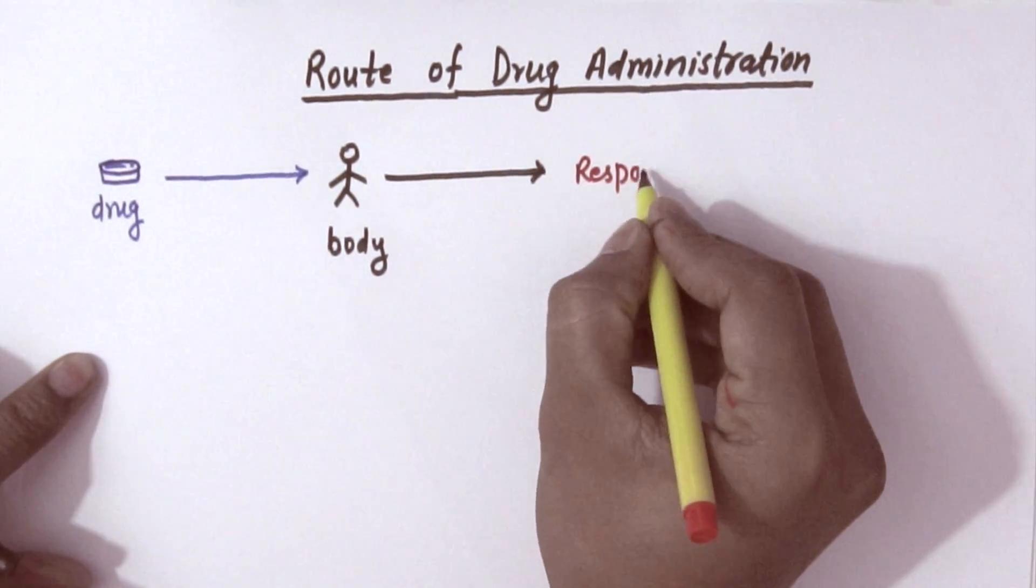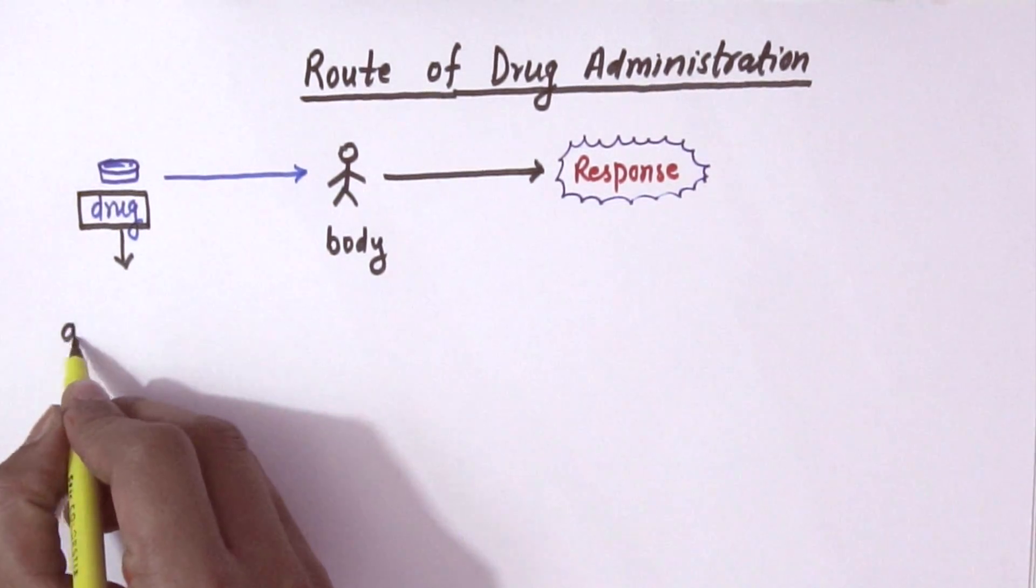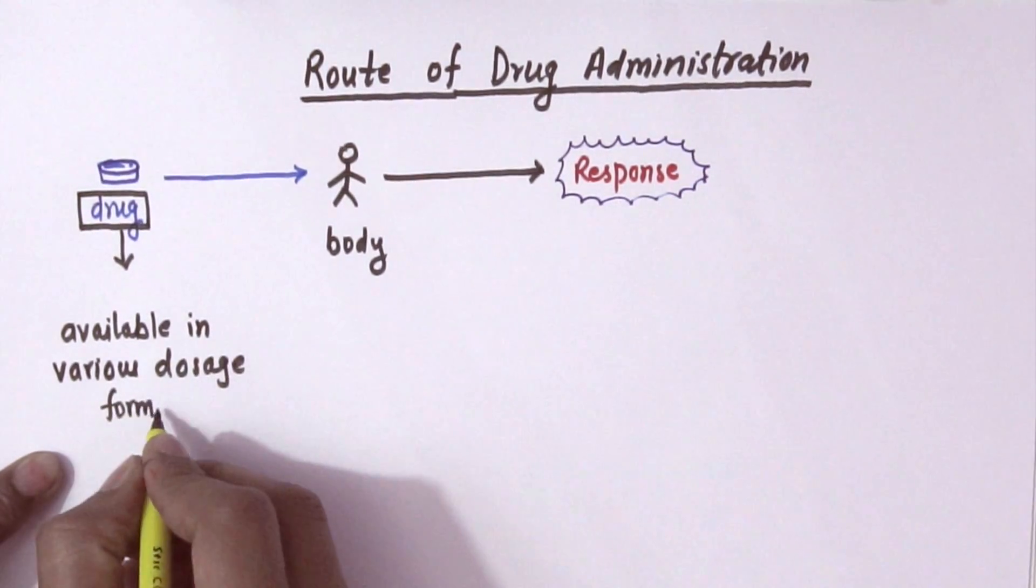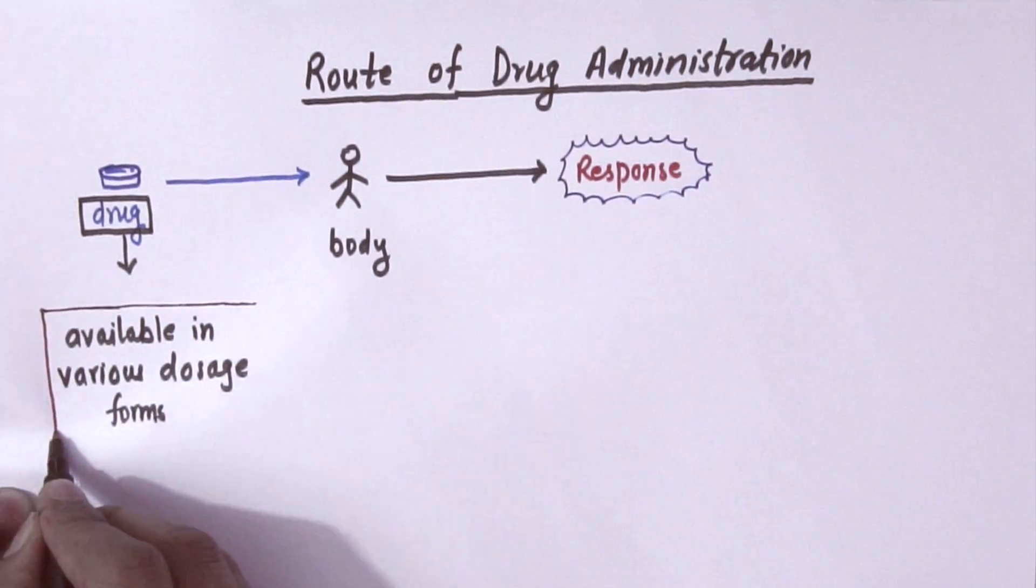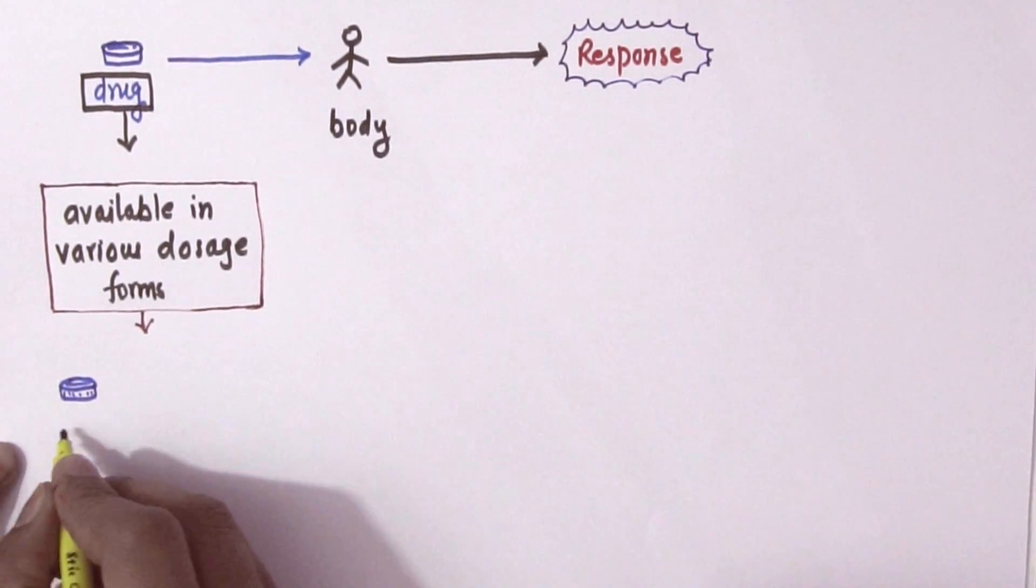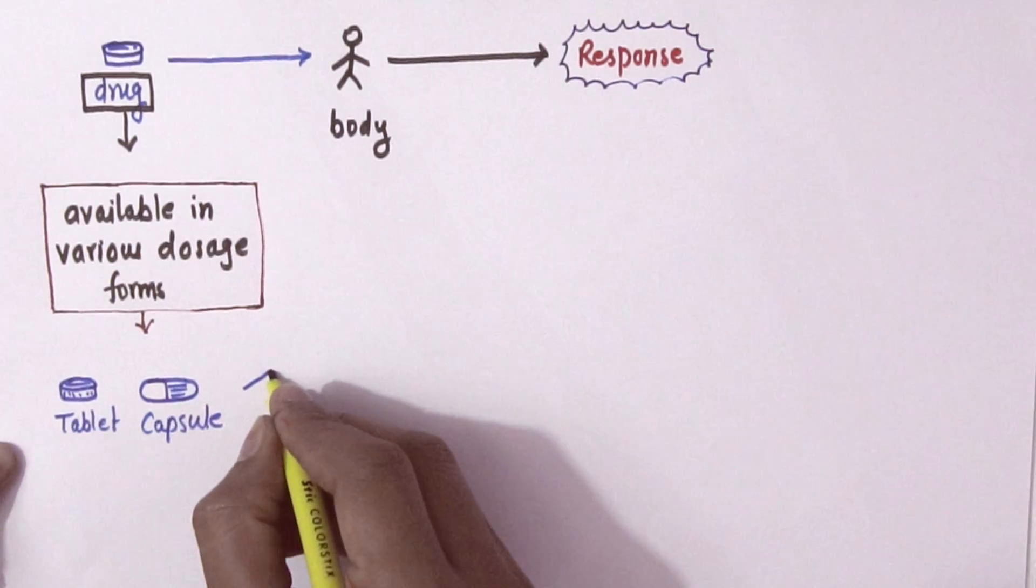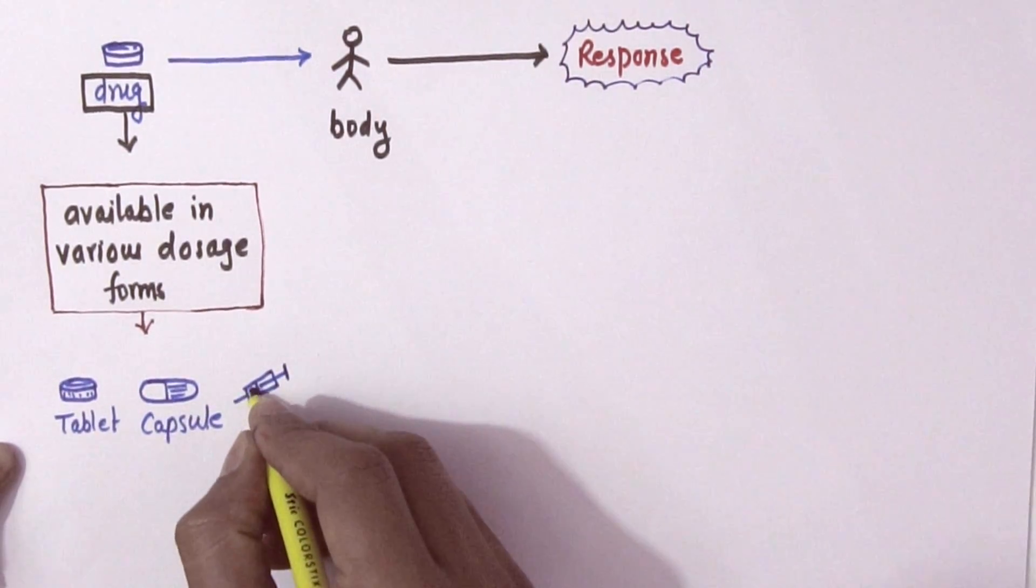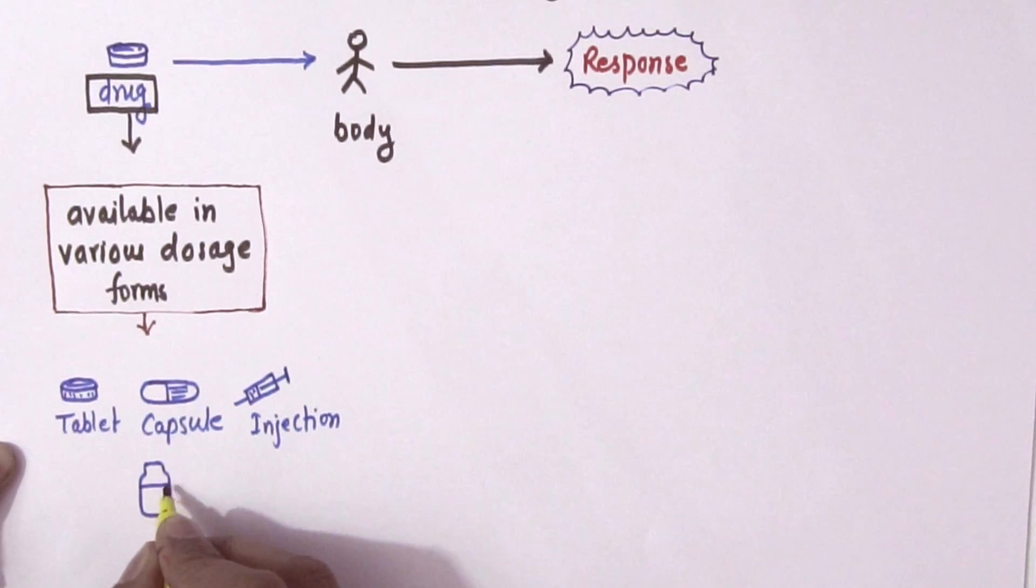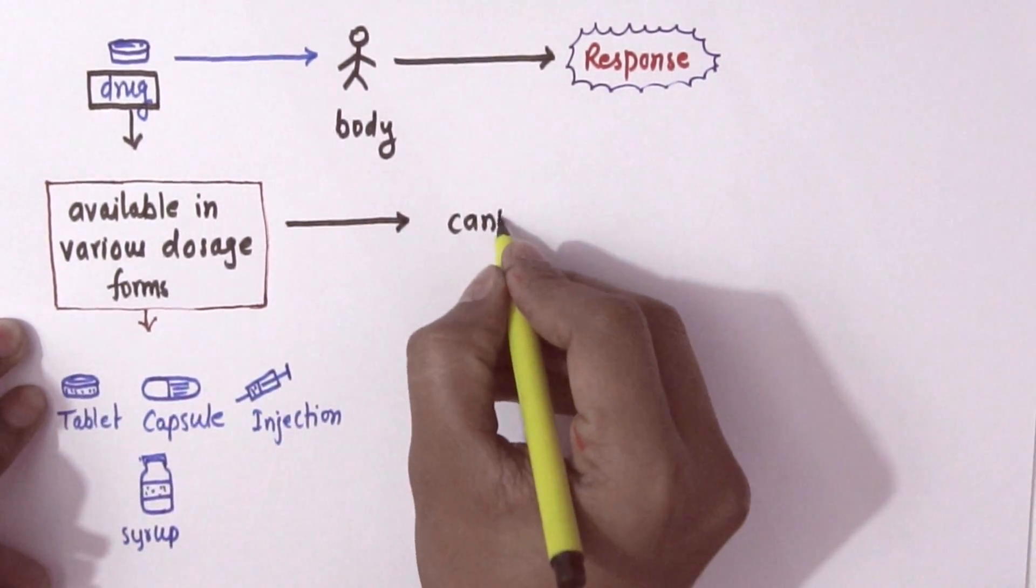We also know that drugs are available in various forms like solid, liquid, and gaseous form, which are available in market in various dosage forms so that they can be administered easily. For example, tablets are solid dosage forms, capsules are also solid dosage forms, injections are liquid dosage forms, and syrups, emulsions, or elixirs are liquid dosage forms.